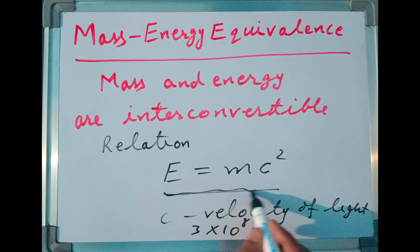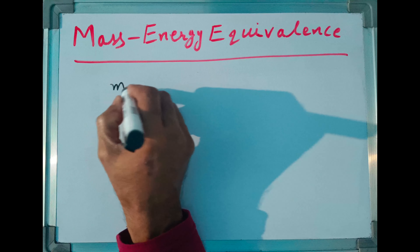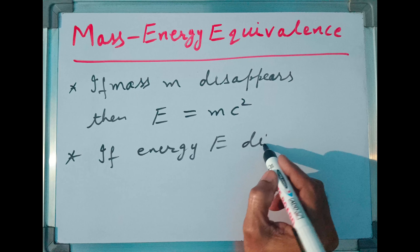This principle — that mass and energy are interconvertible — is called the mass-energy equivalence principle. If an amount of mass m disappears somewhere, then equivalent energy E will appear, given by E = mc². This can also be stated as: if energy E disappears somewhere, then an amount of mass m may appear, given by m = E/c². This means mass gets converted into energy, and energy can be converted into mass.